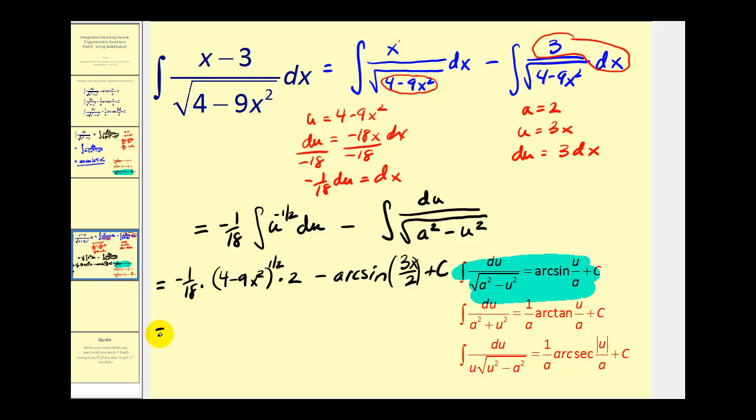Let's go ahead and clean this up one more time. We'll have negative one ninth square root of four minus nine x squared minus arc sine three x divided by two plus c.